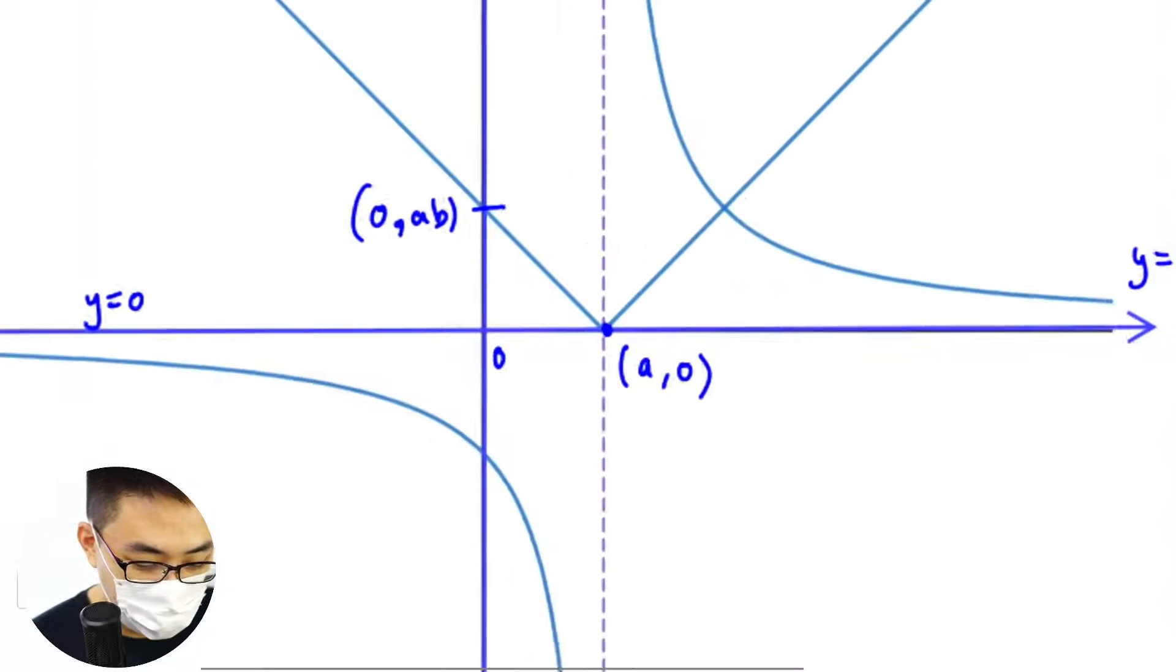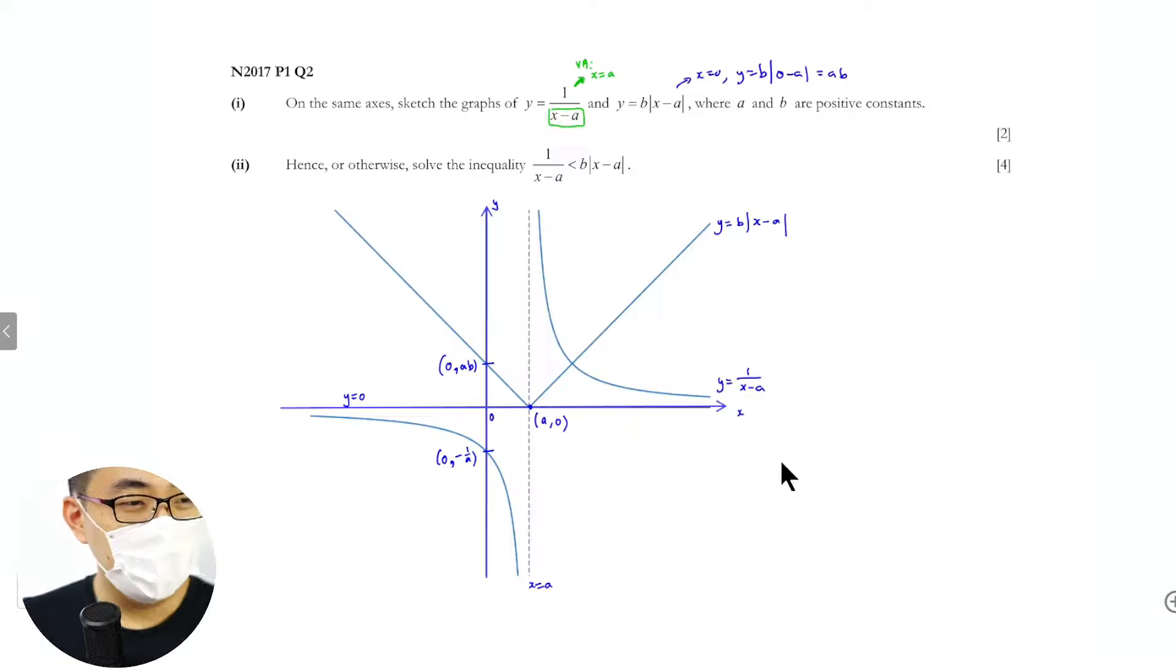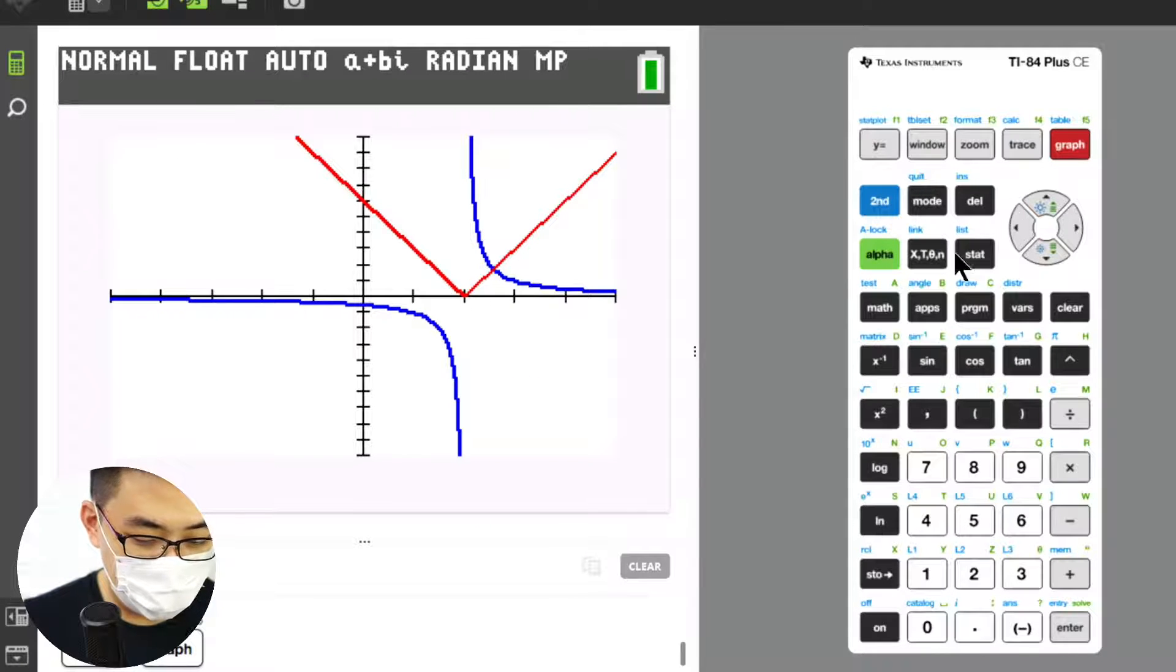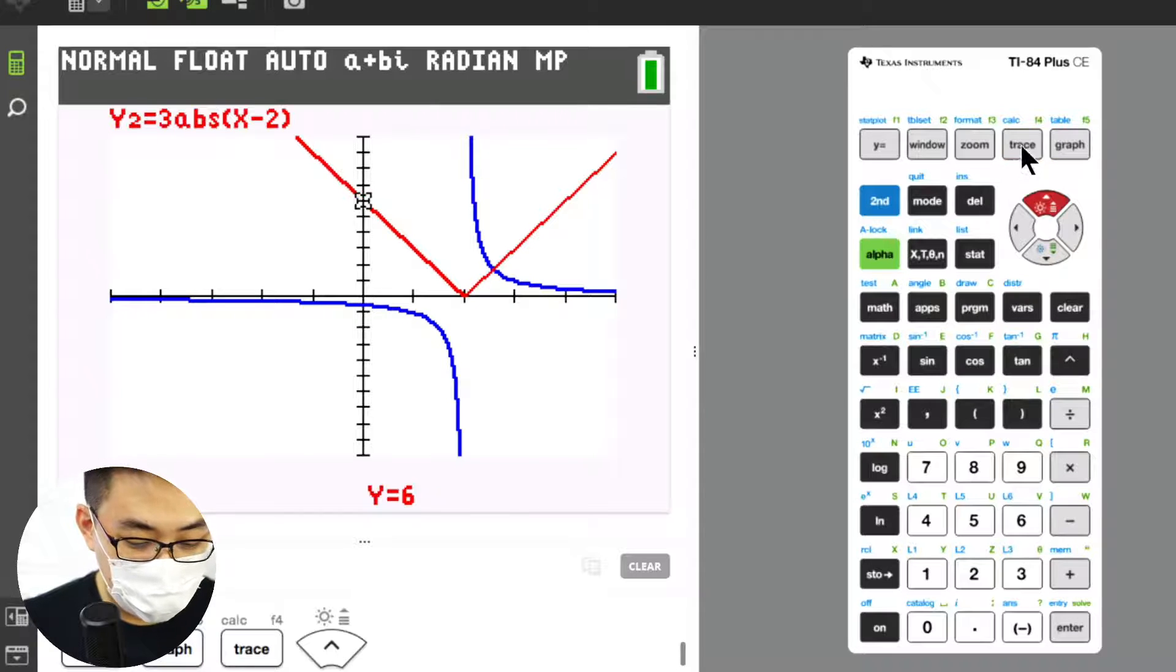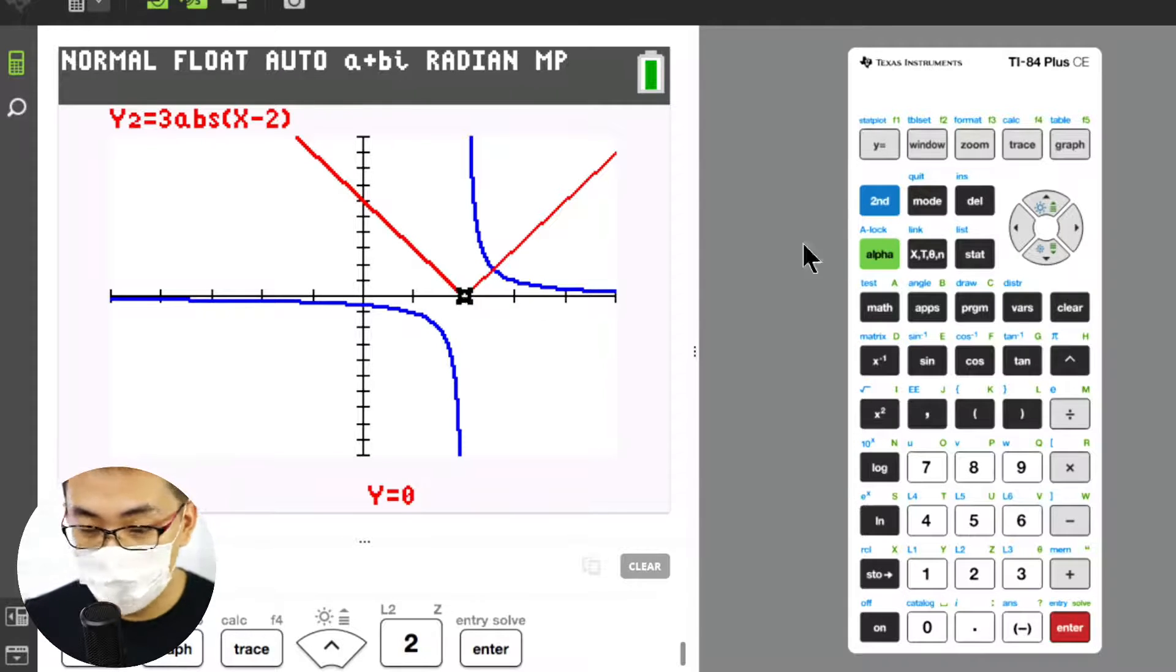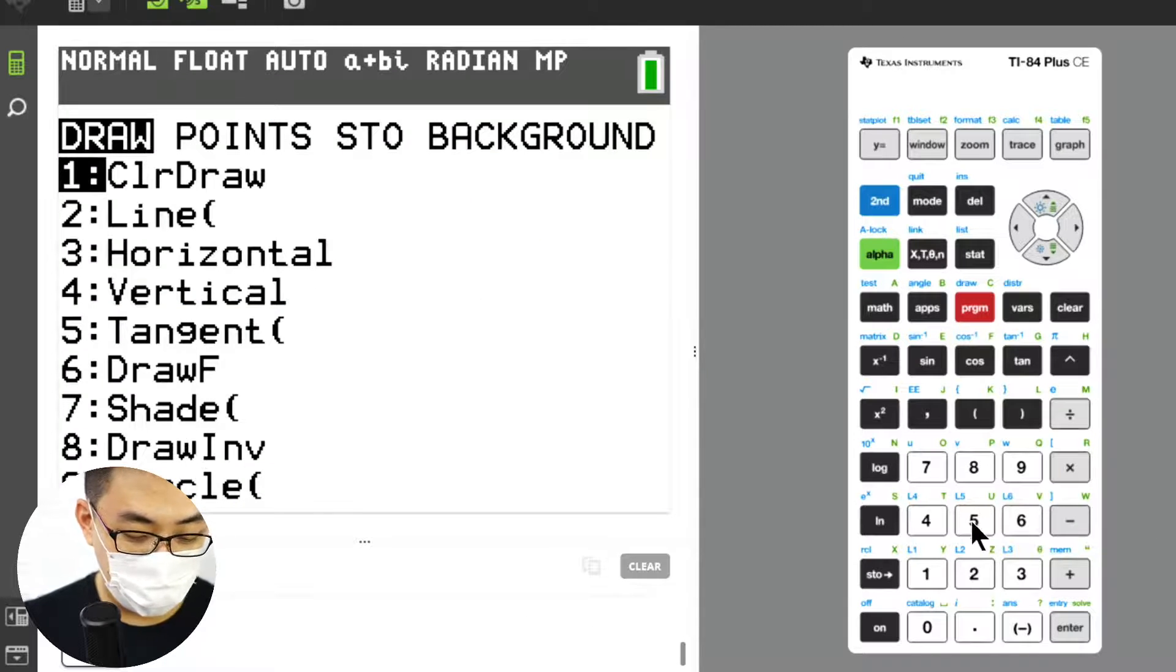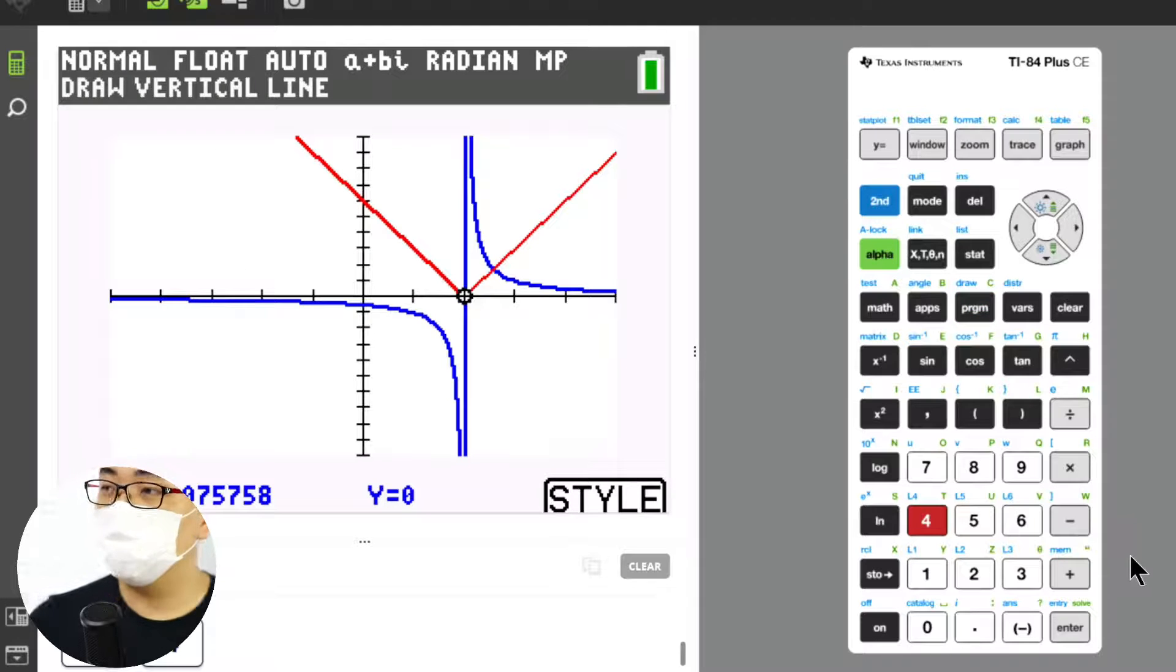In the exam we do not know that this is on the asymptote. What you do is you just press trace, trace, and then press 2, and then you just go to this point here. Then what you do is you see this draw here, second draw, you put vertical line. The vertical line is 4. They'll give you the vertical line there.